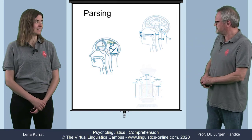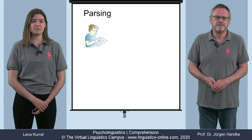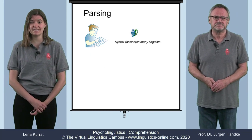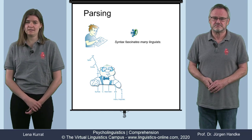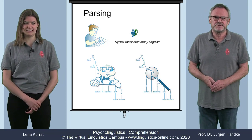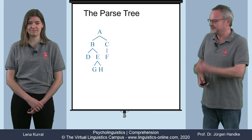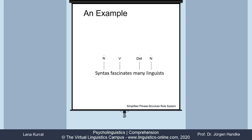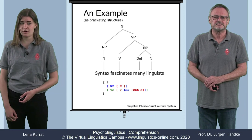Lena, have you come across this term? Yes, I have. Generally speaking, parsing is the process of recognizing an input string and assigning syntactic categories to its constituents, showing their semantic relationship. The visible structure which results from this process is referred to as a parse tree. Let us look at an example. By the way, the result of a parse can also be some sort of bracketing structure like this one.